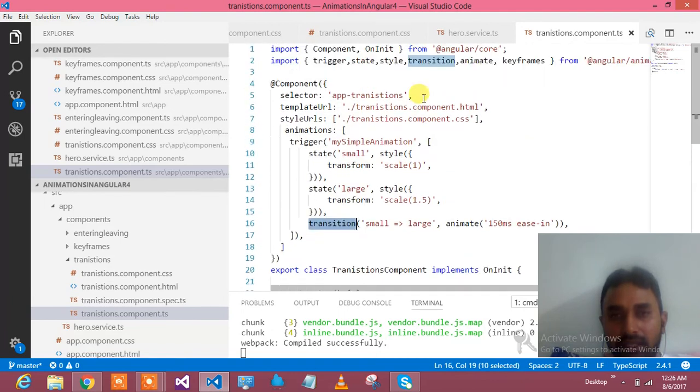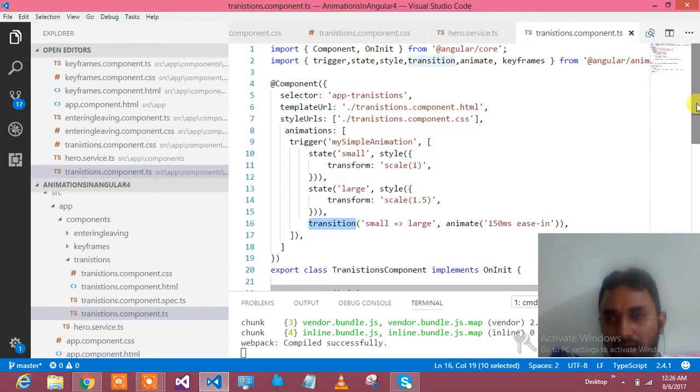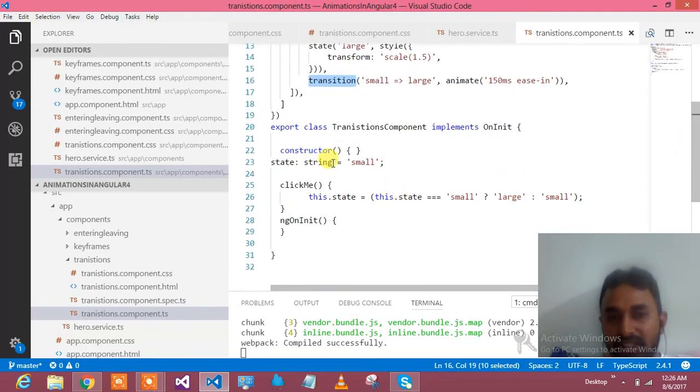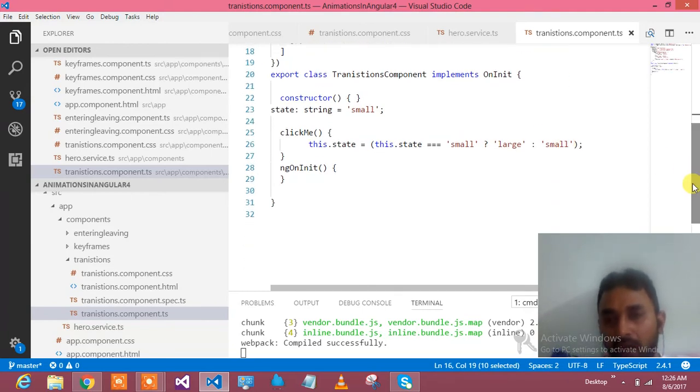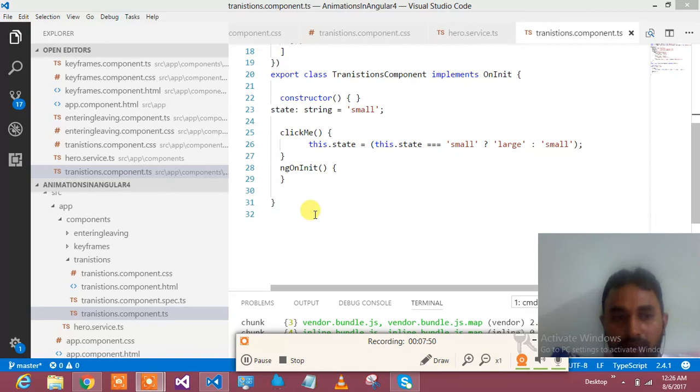In order to see as per our html we are having something called state which we are supplying on the trigger. So let's see what state is over here. I have declared state string equal to small. Initially it is always small. Then the moment you click on that particular step this.state I am making it large, vice versa. So once it is small I am making it to large. Once it is large I am making it to small. So this is the theory about this transitions.